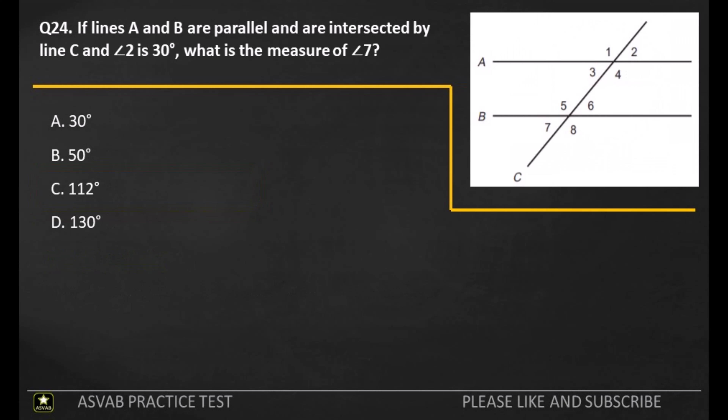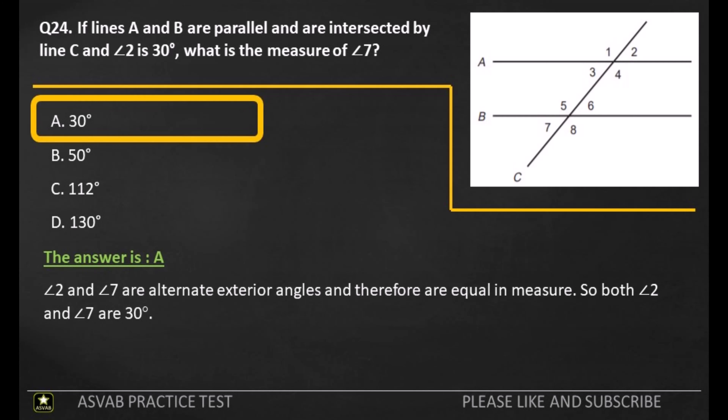Q24. If lines A and B are parallel and are intersected by line C, and angle 2 is 30 degrees, what is the measure of angle 7? A: 30 degrees. B: 50 degrees. C: 112 degrees. D: 130 degrees. The answer is A. Angles 2 and 7 are alternate exterior angles and therefore are equal in measure. So both angle 2 and angle 7 are 30 degrees.